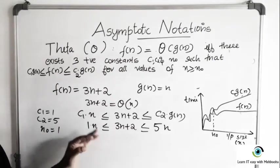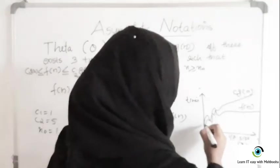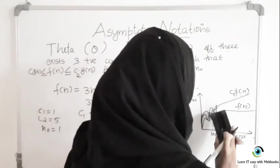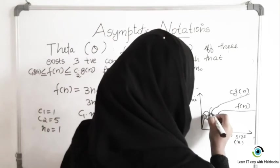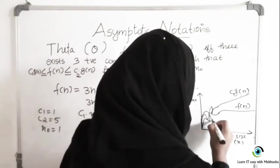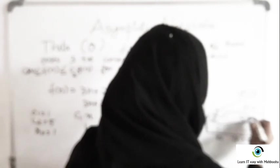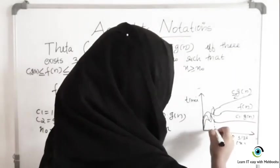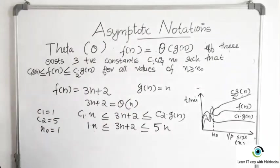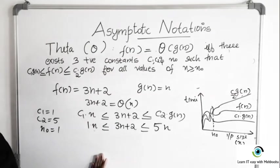So that's all the difference. Theta is a very tight bound — it gives you the average case complexity. For all values of N greater than N0, C1 times G of N is less than or equal to F of N, which is less than or equal to C2 times G of N. Theta gives you the average case complexity of an algorithm.